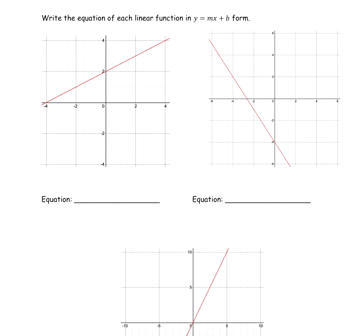Given a graph, let's write the linear equation in y equals mx plus b form. I always look for the y-intercept first if it's a nice integer. For this first graph, it crosses at 2, so b equals 2. My equation starts as y equals something times x plus 2. To find the slope, I need two points. I'll use negative 4 comma 0 and the y-intercept 0 comma 2.